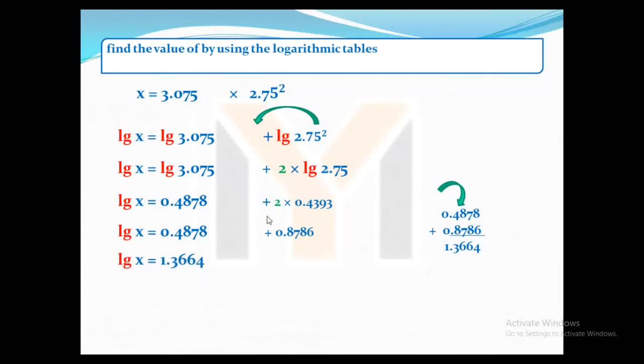Now we can find the antilog of that 1.3664. What we have to do is add 1 for the characteristic. The characteristic is 1, so earlier we subtracted by 1 and now we have to add 1 for the characteristic, then that's 2. That means we will get 2 whole numbers this time. Now we have to find the antilog of 3664.